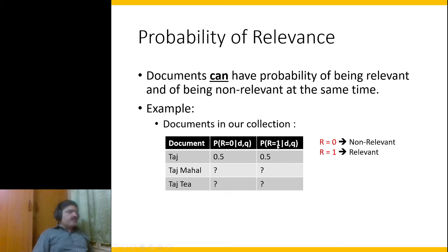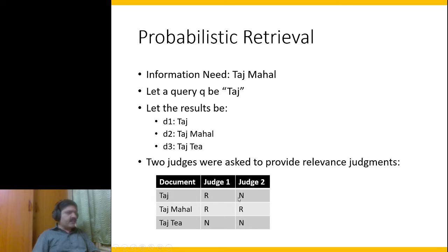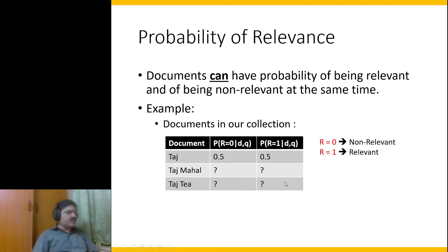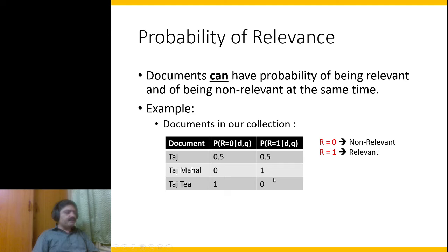We can now compute the probability of relevance. The probability P(r=1 | d, q) given document d and query q: one judge thinks Taj is relevant and one doesn't, so we give a value of 0.5. For Taj Mahal, both judges thought it is relevant, so we give a value of 1. For Taj D, both judges thought it is non-relevant, so the probability of relevance is 0.